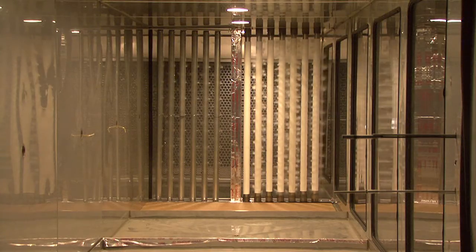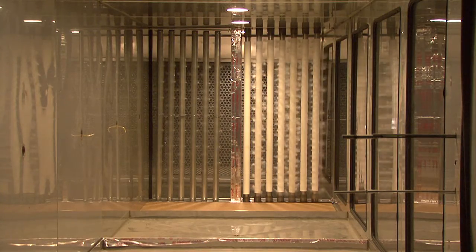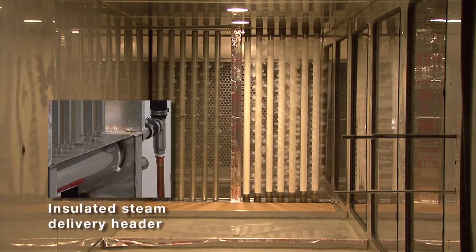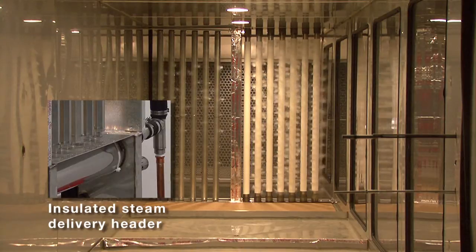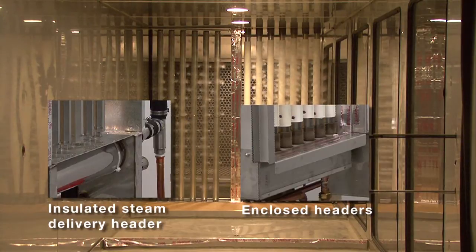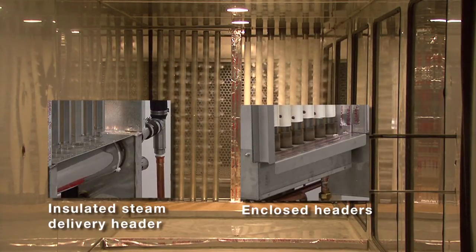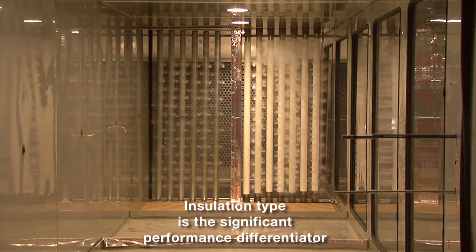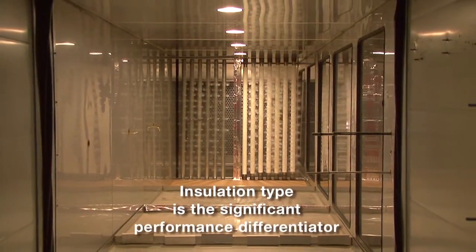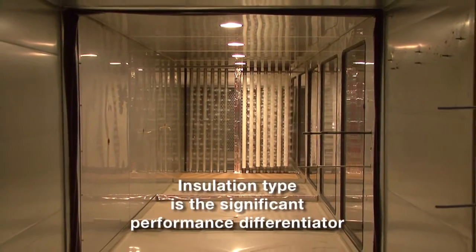The two dispersion assemblies are very similar in construction except the dispersion assembly on the left has an optional insulated steam delivery header, and the dispersion assembly on the right has factory standard enclosures around the steam delivery and condensate drain headers, and also has an extra inactive tube that functions as a header drain. However, the significant difference impacting efficiency between these two dispersion assemblies is their dispersion tube insulating technology.